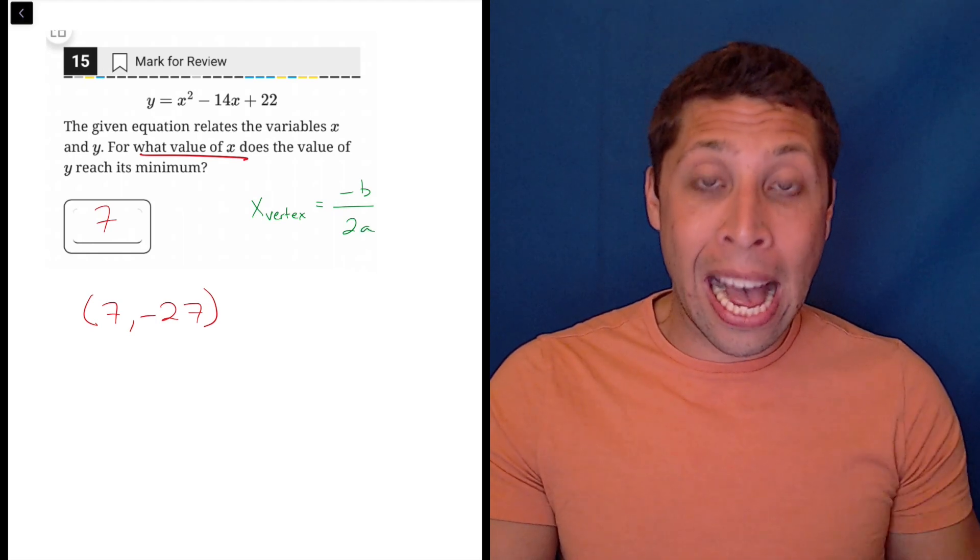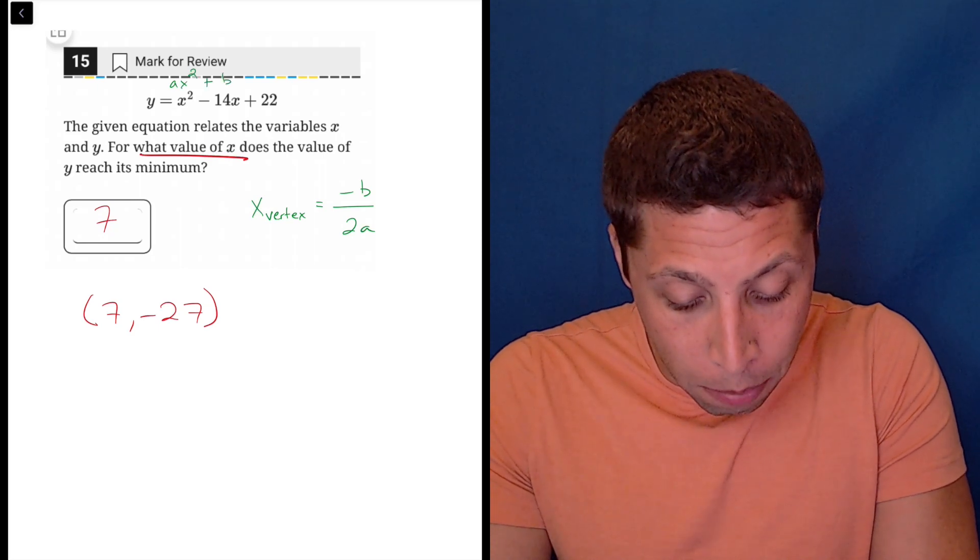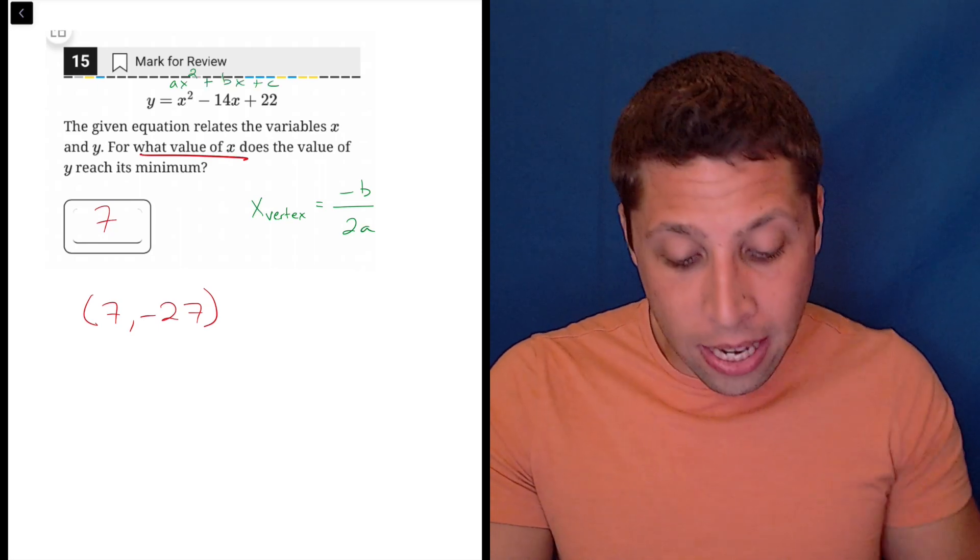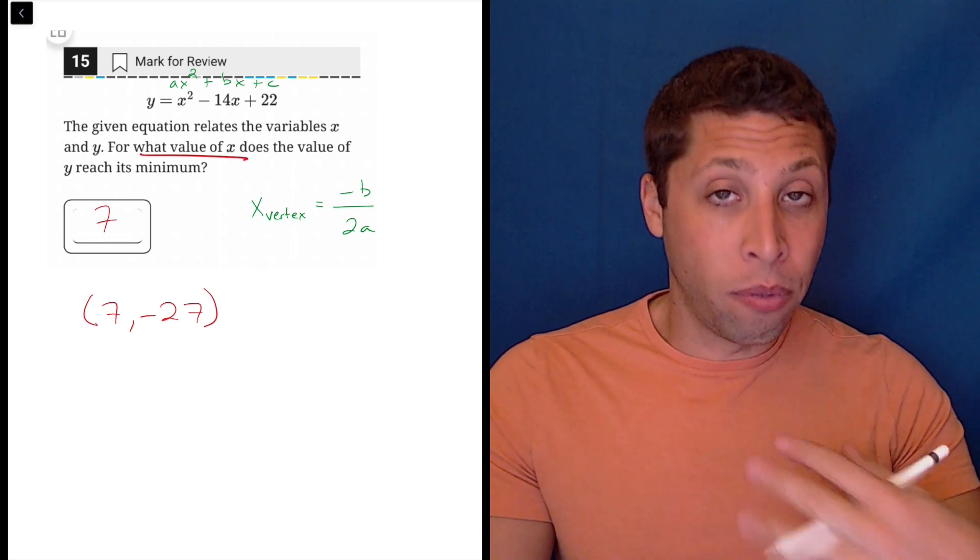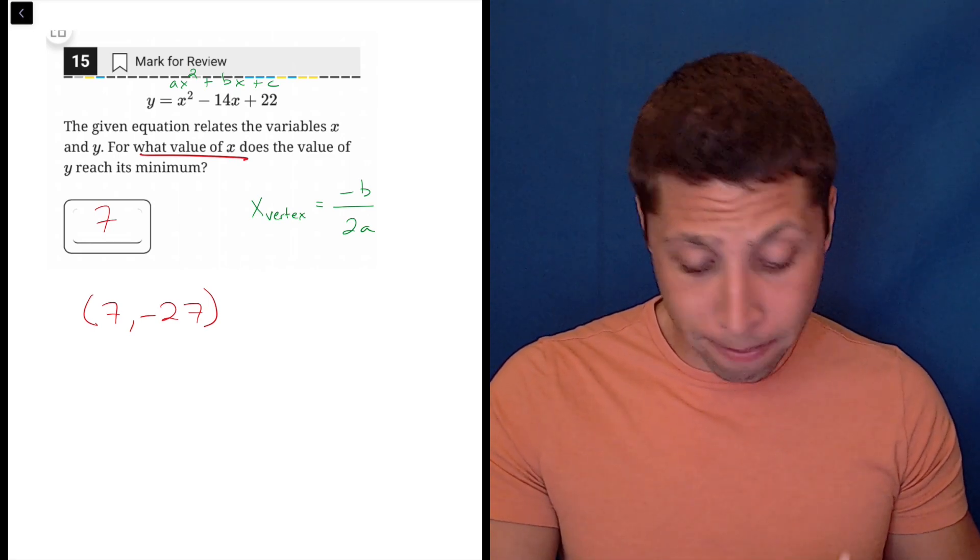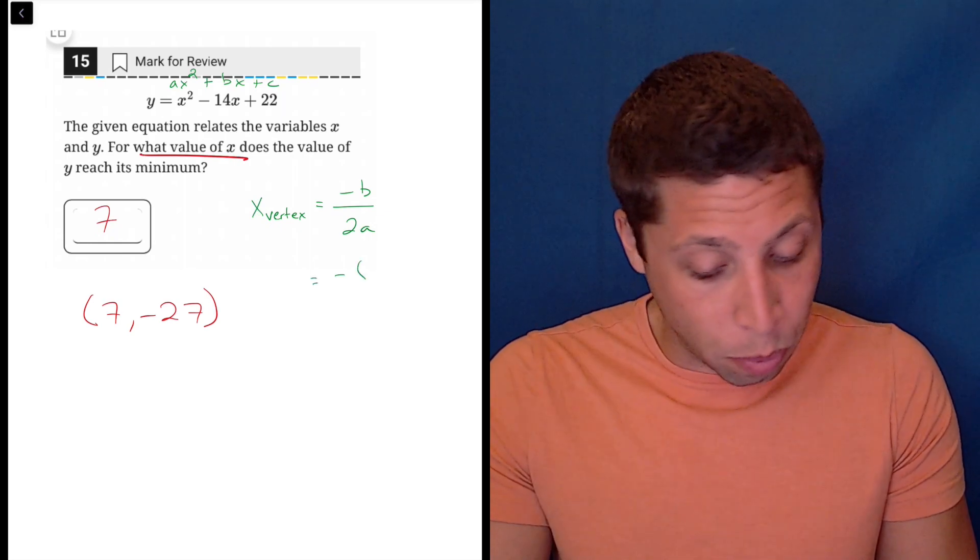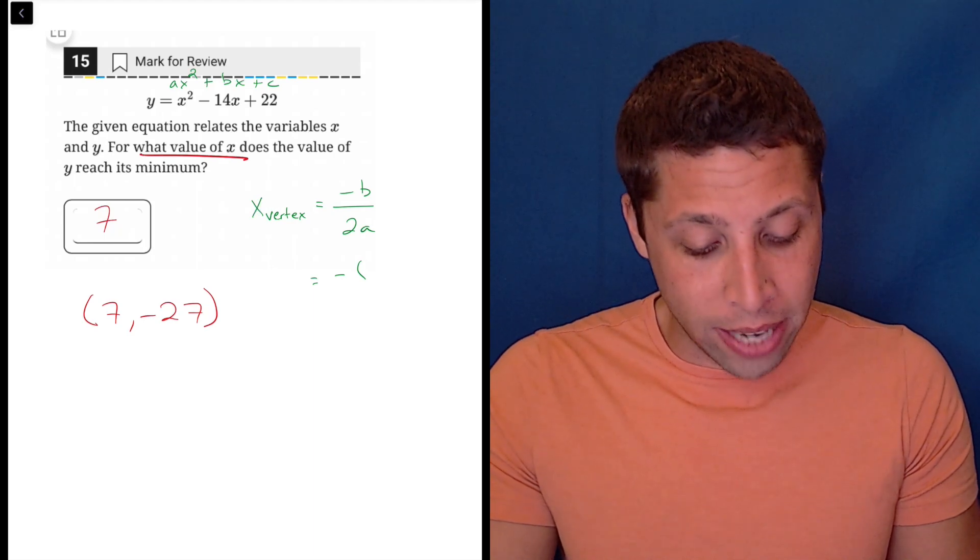And it is negative b over 2a. Meaning when we have an equation, a parabola, in this format, ax squared plus bx plus c, I can pull out the right numbers and use them to solve this. So in this case, it's written in that format. All I have to do is pull out the numbers. So negative, and be careful here, b is the number attached to the x.